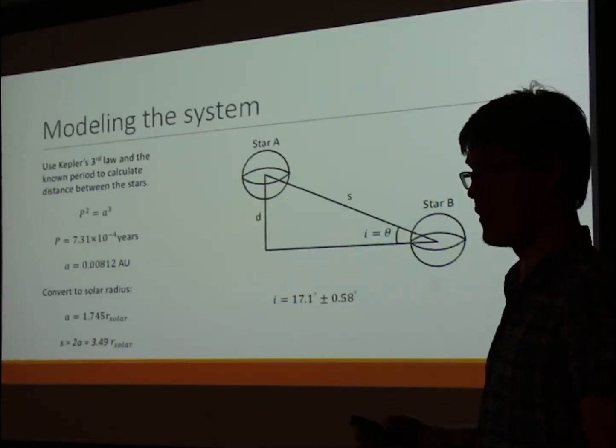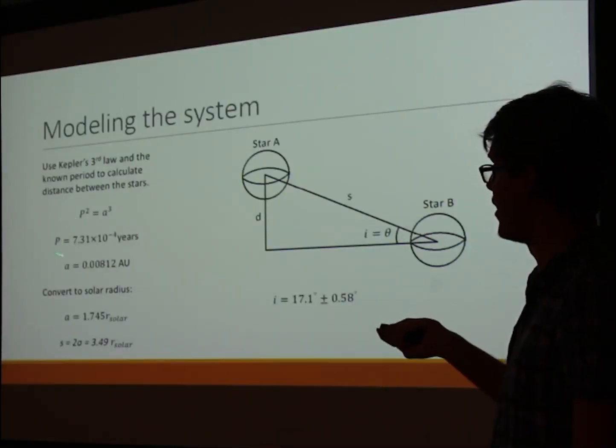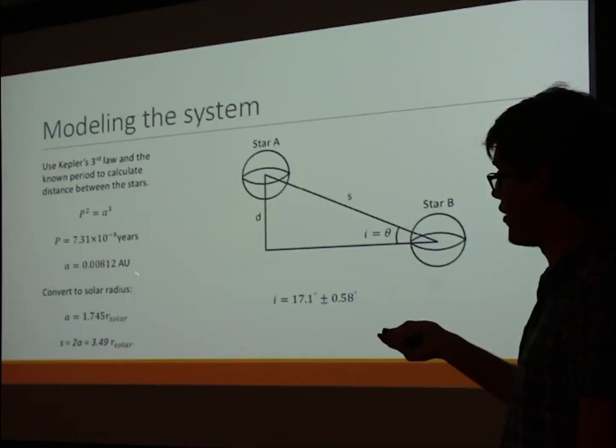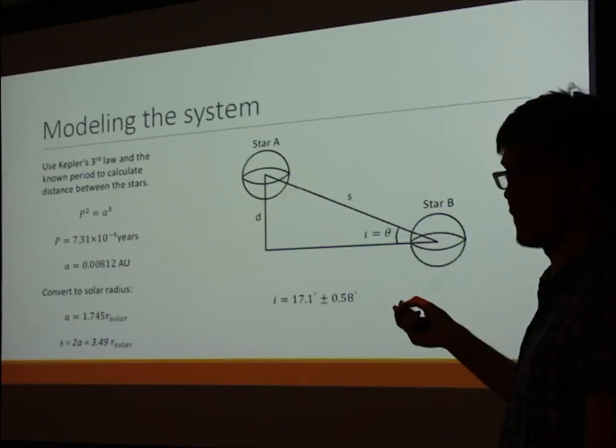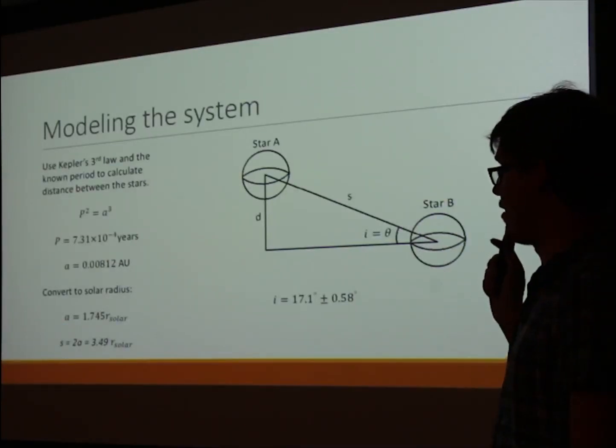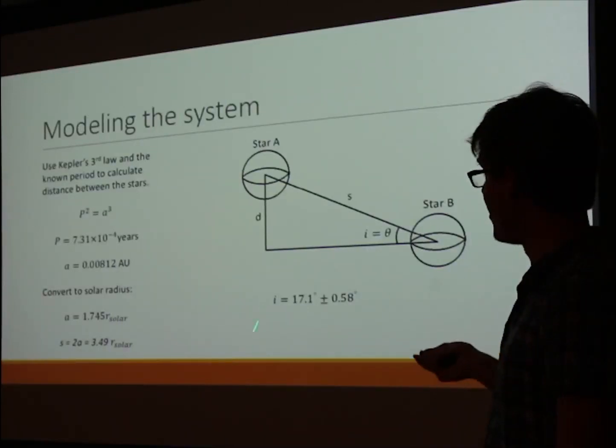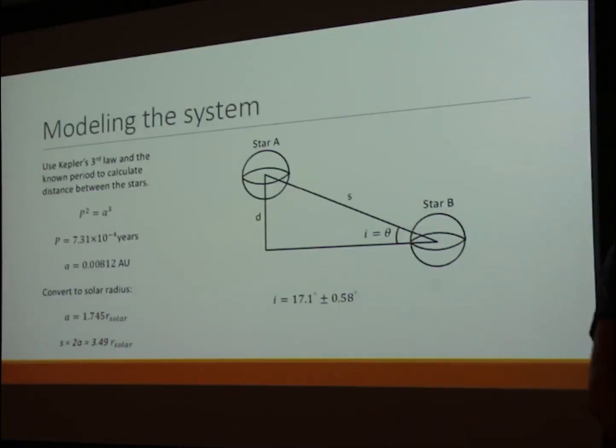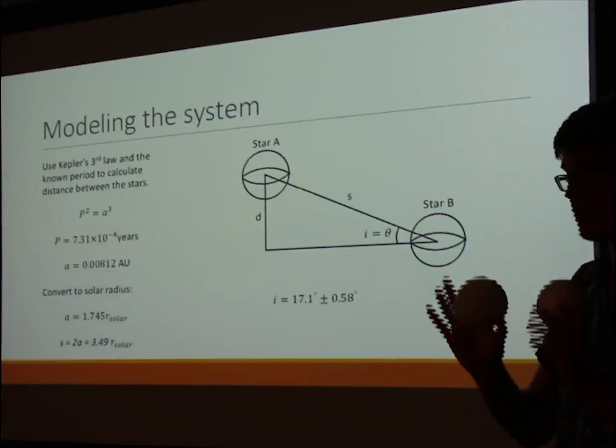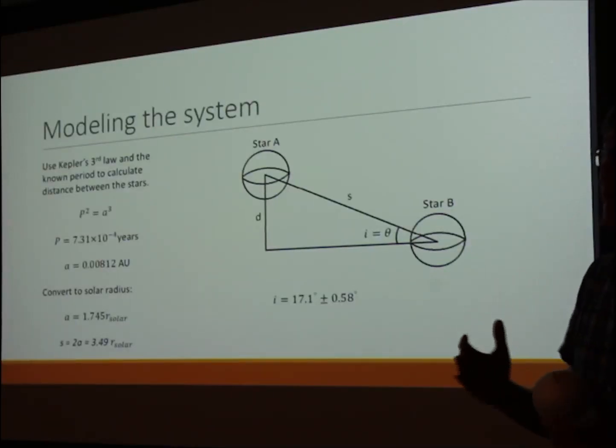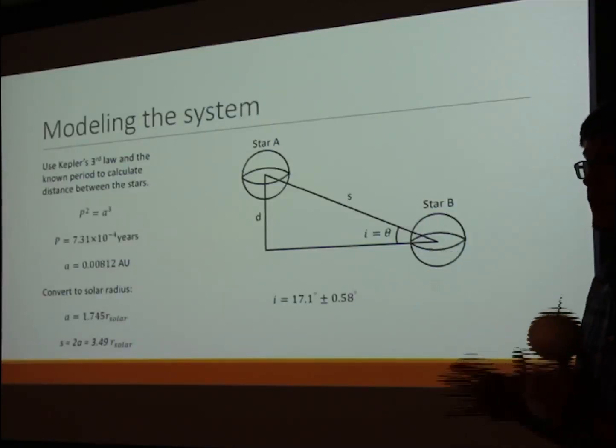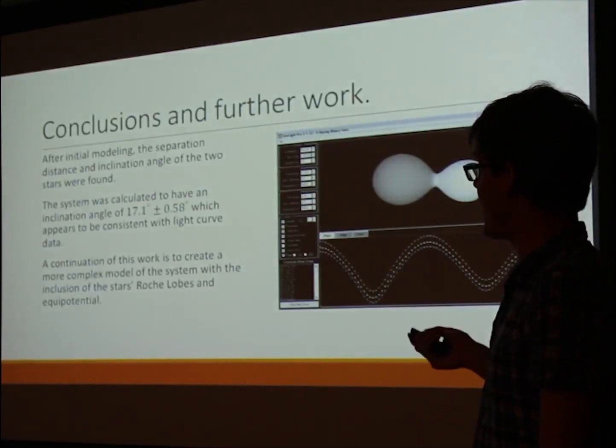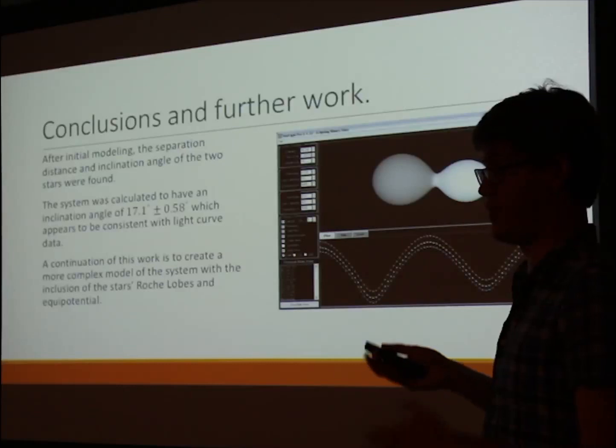To do that, I used Kepler's law to determine the radius of the orbit of each star, because the period is known. We've calculated that value here in astronomical units, converted it to solar radii, which is also what the value for d is in. Did some trigonometry, and I determined that the inclination angle of the system is 17.1 degrees, plus or minus an uncertainty of 0.58 degrees. That value makes sense—it's not a large inclination angle, so the fact that the minimum brightness was just slightly more than half of the maximum supports that this inclination angle is a fairly accurate result.